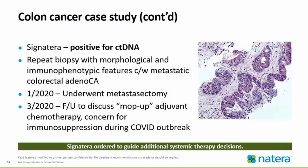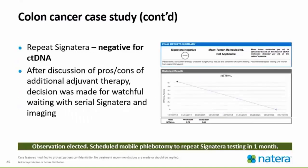The patient and provider were both concerned about immunosuppression with chemotherapy in the midst of the COVID outbreak. Signatera was ordered again to help guide whether it was reasonable to continue with systemic therapy or to hold off. Repeat Signatera, fortunately, came back negative for ctDNA. After discussing pros and cons and whether additional therapy was warranted, it was decided to watch and wait. Serial Signatera continued to be ordered along with repeat imaging. A mobile phlebotomist came out to the home and Signatera was repeated again in one month and continued to show negativity, which was great.